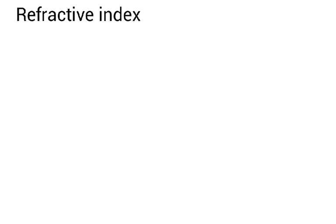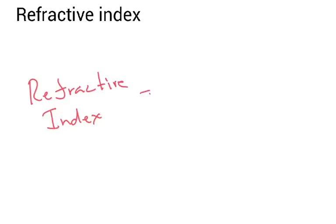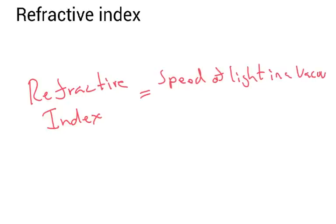In order to do some calculations with refraction we need to understand something called refractive index. Refractive index is a quantity that describes how light slows down as it passes into a different material. The equation to calculate refractive index is: the refractive index is equal to the speed of light in a vacuum divided by the speed of light in your material.